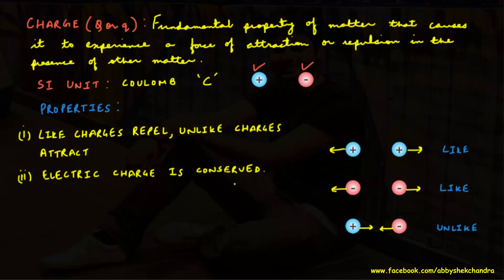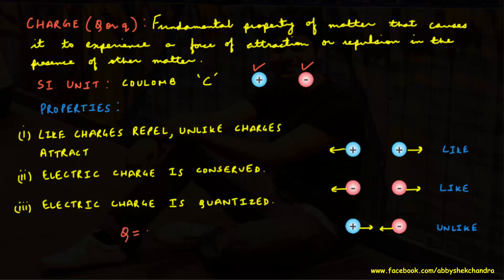Two, electric charge is conserved — it can neither be created nor destroyed. The net charge, that is the algebraic sum of positive and negative charges in an isolated system, is constant. Three, total charge on any body is an integral multiple of the charge on an electron or a proton, meaning electric charge is quantized.